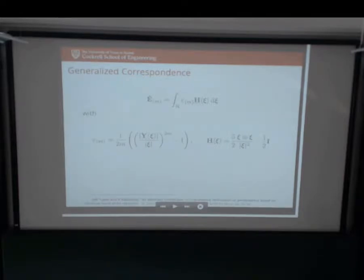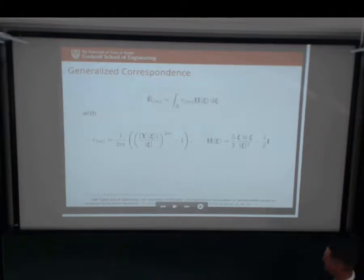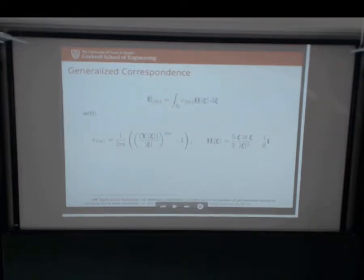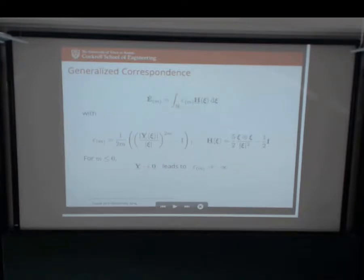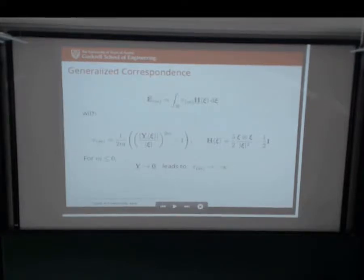Whereas the previous correspondence model - the one Stuart derived with the deformation gradient - had a moment matrix that seemed to take care of irregularities in the kernel. This doesn't have that. For any value of M less than or equal to zero, if you take this to zero, it leads to minus infinity, so any quadratic strain energy density functional would blow up. It has the correct behavior in the sense that it penalizes these deformations and won't allow infinite deformation with a finite force. But the other dissatisfying thing about just presenting the strain tensor without the other kinematics is that there's no notion of pullback or push forward operations - so it's not clear how to do plasticity. We need finite deformation plasticity, we need a pullback or push forward into some unstressed intermediate configuration.